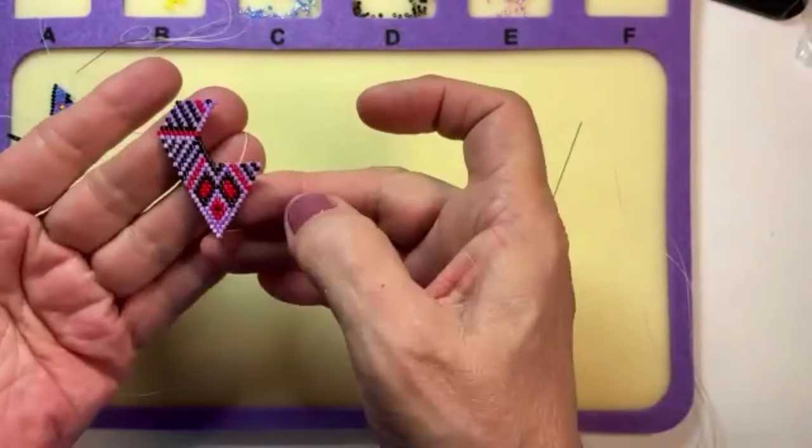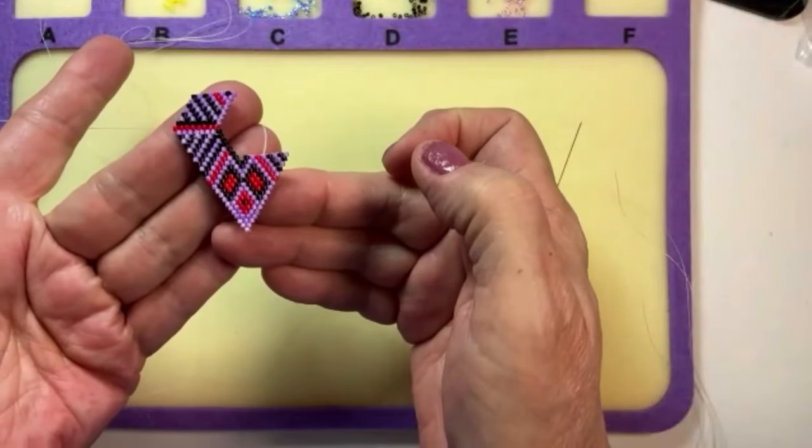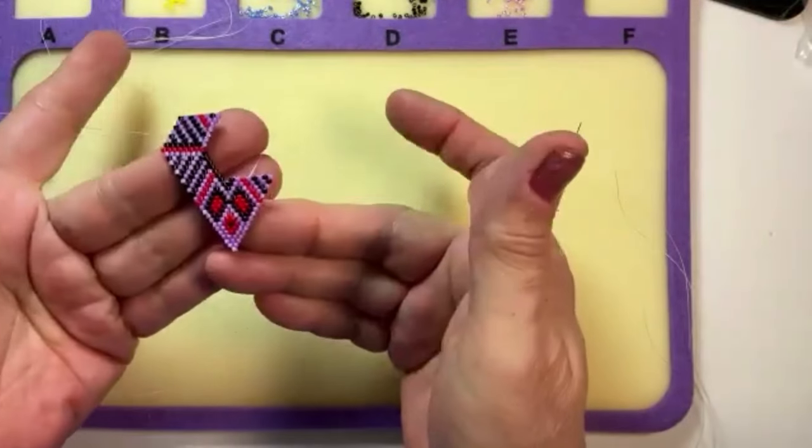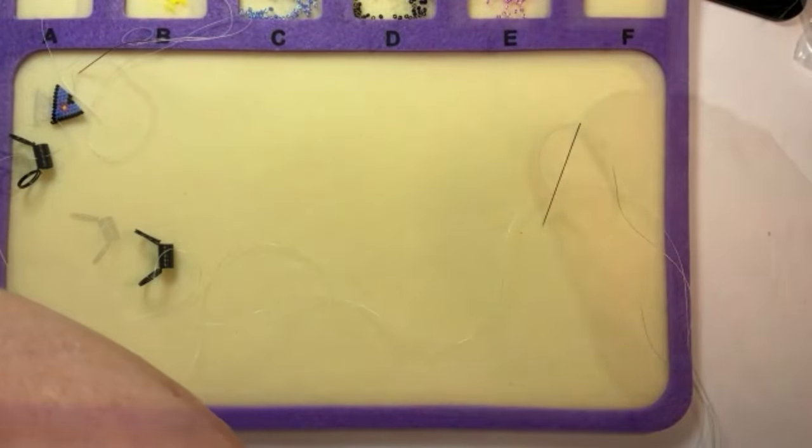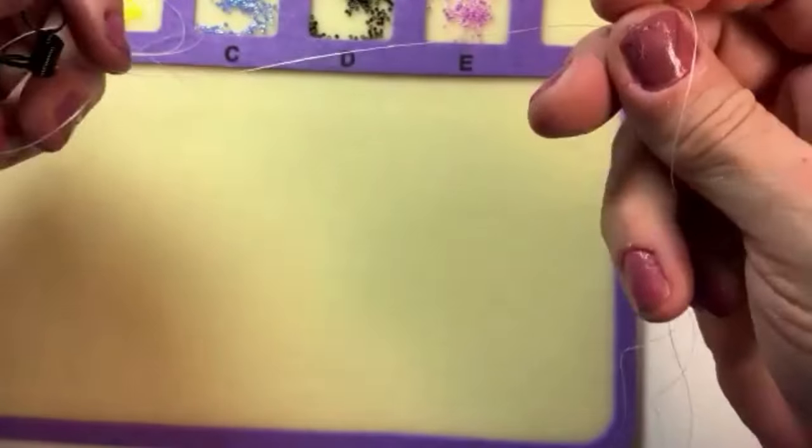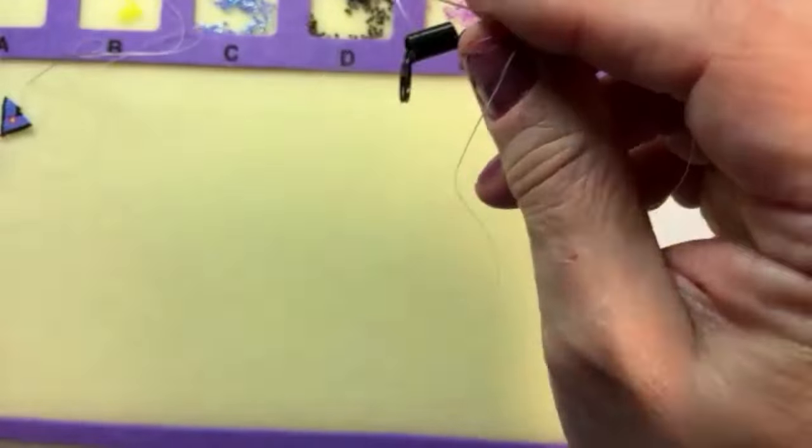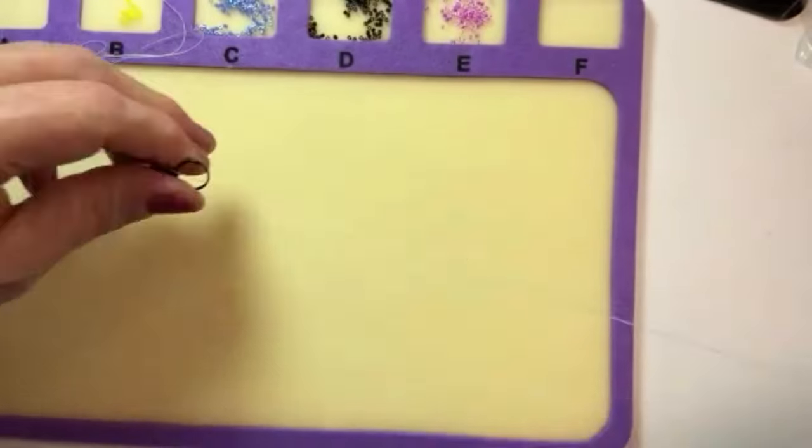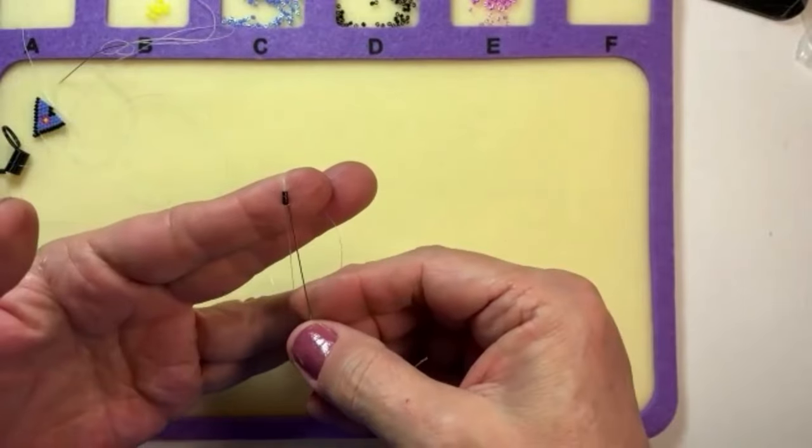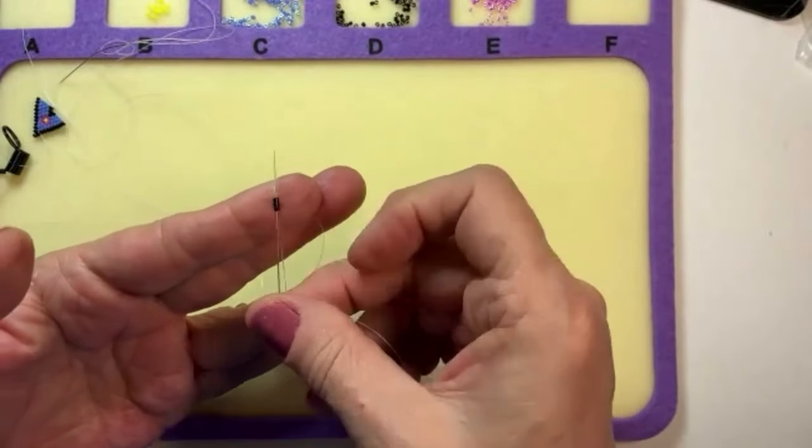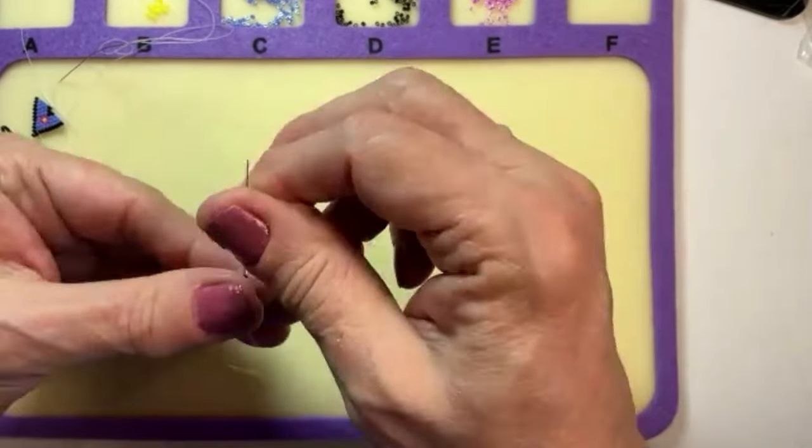I didn't have any gray, so I used my purple. A workable thread for me is two wingspan. I started with three beads for the bottom. Now I go back through the three beads.